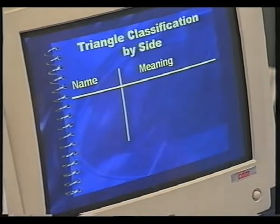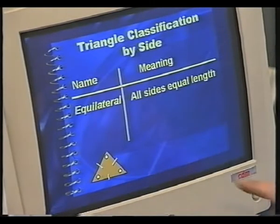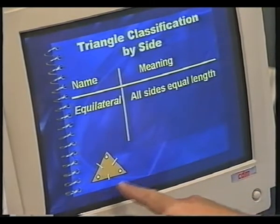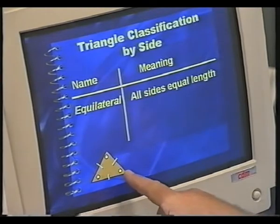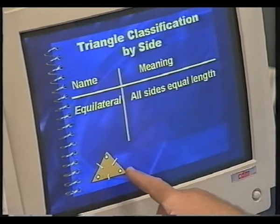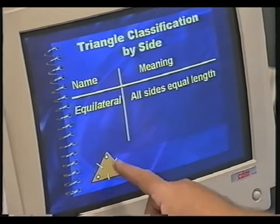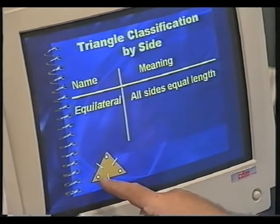Go on to classification by side. We can have an equilateral triangle. Fancy words these are. I know they're difficult to remember, but that's the way they are. An equilateral triangle has got three sides the same. As a result, the three angles there are the same too.